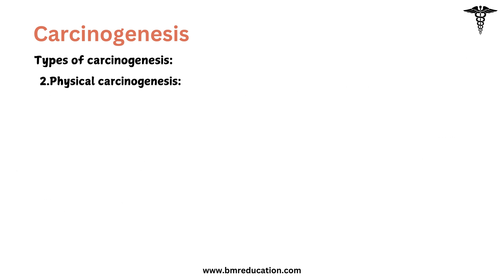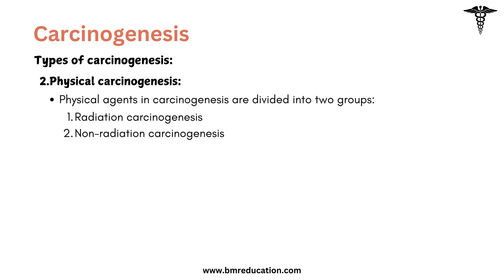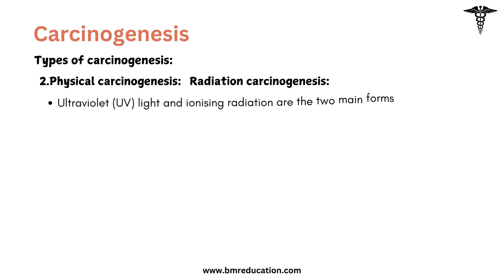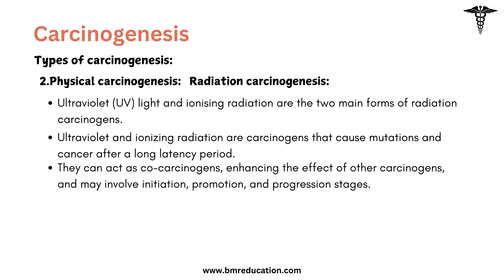The next type is physical carcinogenesis. It involves agents that are not chemical in nature but can still induce significant cellular changes leading to cancer. There are two primary categories: radiation, which includes both ultraviolet light and ionizing radiation, and non-radiation agents. Ultraviolet light and ionizing radiation are both carcinogens that cause mutations and cancer after a long latency period. They can act as co-carcinogens, enhancing the effect of other carcinogens, and may involve initiation, promotion, and progression stages.